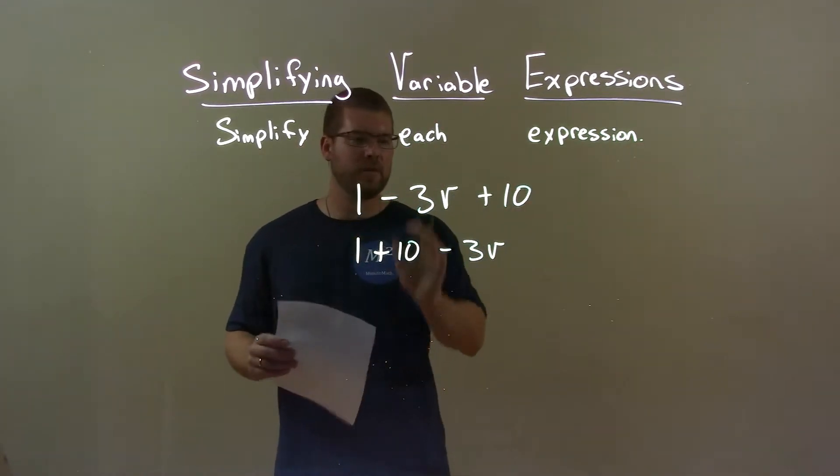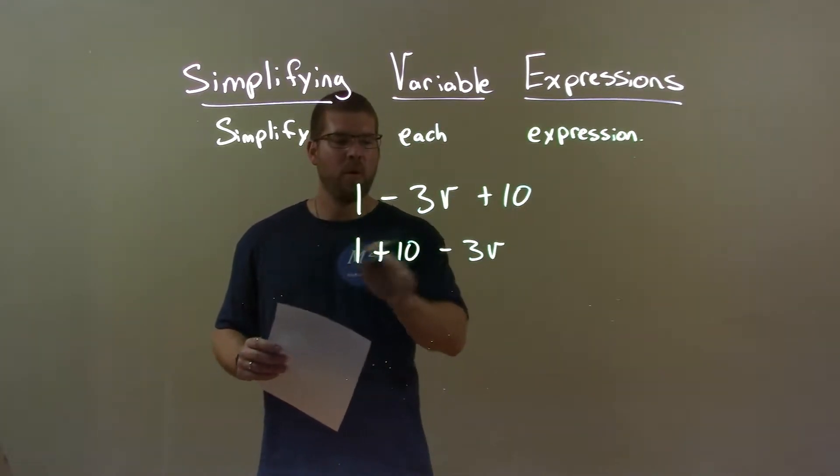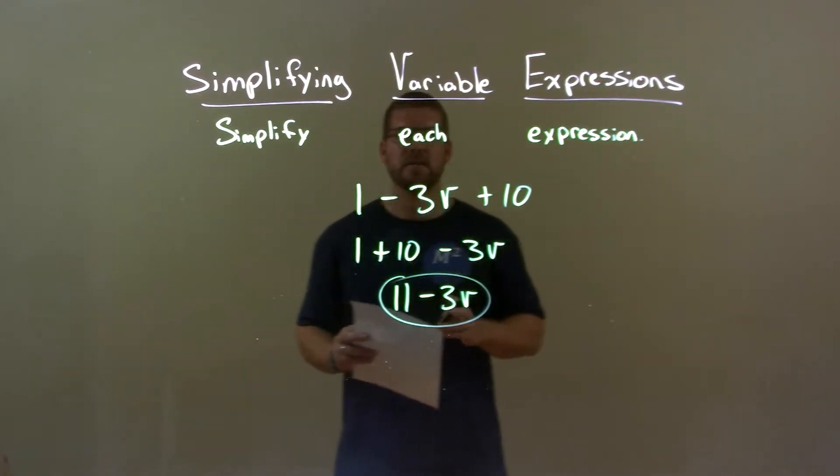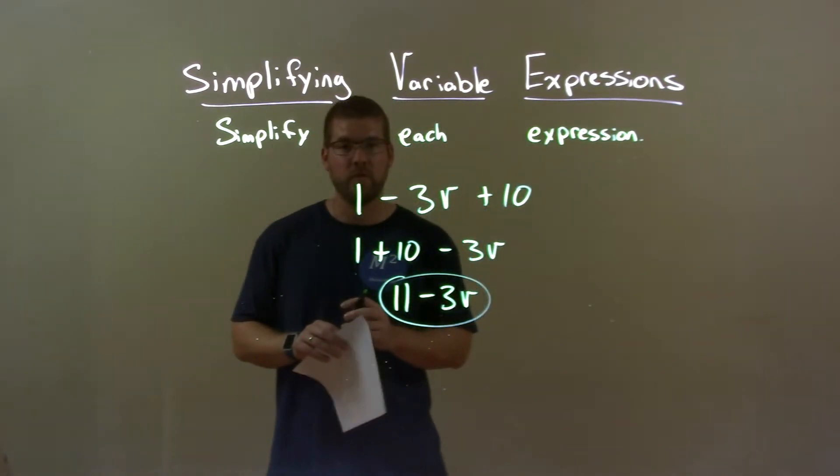So, I brought my numbers to the left here, my variables to the right. And now, 1 plus 10 is 11 and 3V can't be combined with the numbers. So, we have minus 3V, they're different terms. So, my final answer here is just 11 minus 3V.